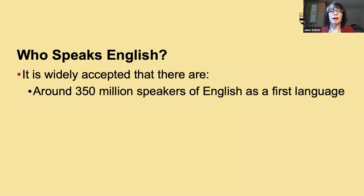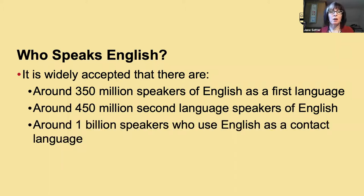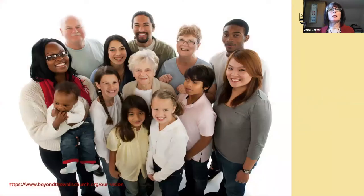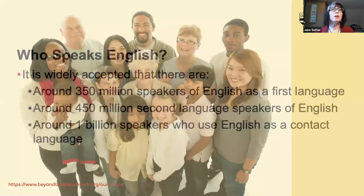It's widely accepted that there are around 350 million speakers of English as a first language, about 450 million second language English speakers, and about 1 billion speakers who use English as a contact language — and that latter group is expanding a lot. When we think about what an English speaker looks like, we should really be thinking more broadly. English speakers come from all walks of life, all areas of the world, all different ethnicities. Thinking that a speaker of English is a particular kind of person — for example, a white person — is really not representative.